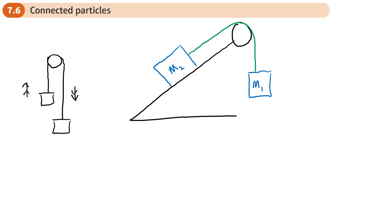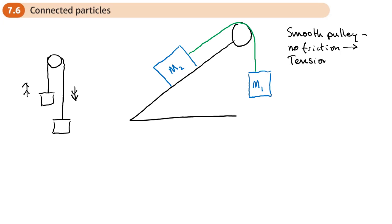Before we start putting on forces and looking at angles, just a couple of key phrases. If you see the phrase 'smooth pulley', this means that there's no friction in the pulley, and if there's no friction in the pulley, that actually means that the tension in any part of the string is the same — tension is constant throughout the string or rope.